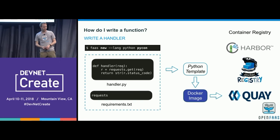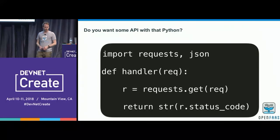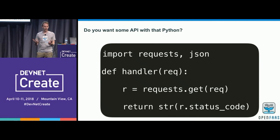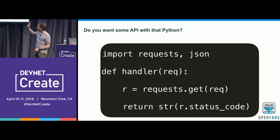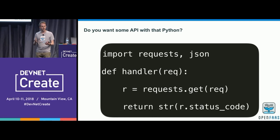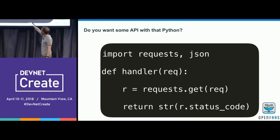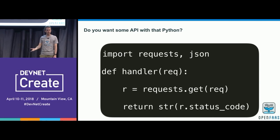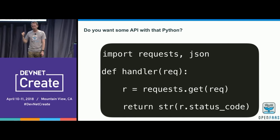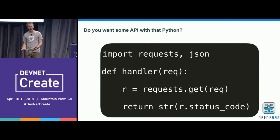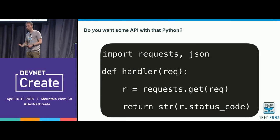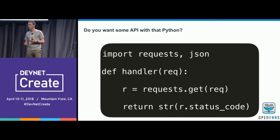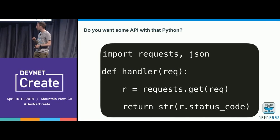Here's an example of what a function might look like — just a handler that takes a request, goes off and pings a website, and returns the status code: 200 for found, 404 for not found. Those four lines of code, once deployed in OpenFaaS, are an API. You can scale it up and down, you've got full metrics, it's running through Docker on Kubernetes, and you don't have to worry about any of that.